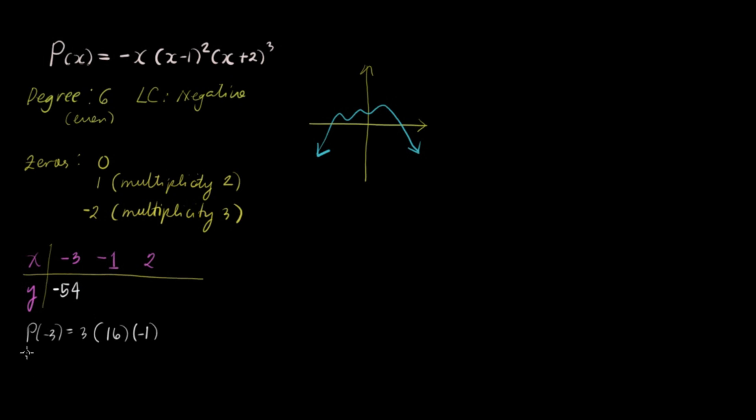And then, at negative one, P of negative one. So, P of negative one will become one. This will become one. And this will become negative two squared. So, it will become four. And then, negative one plus two is positive one cubed. It's positive one. And then, four times one times one is four.